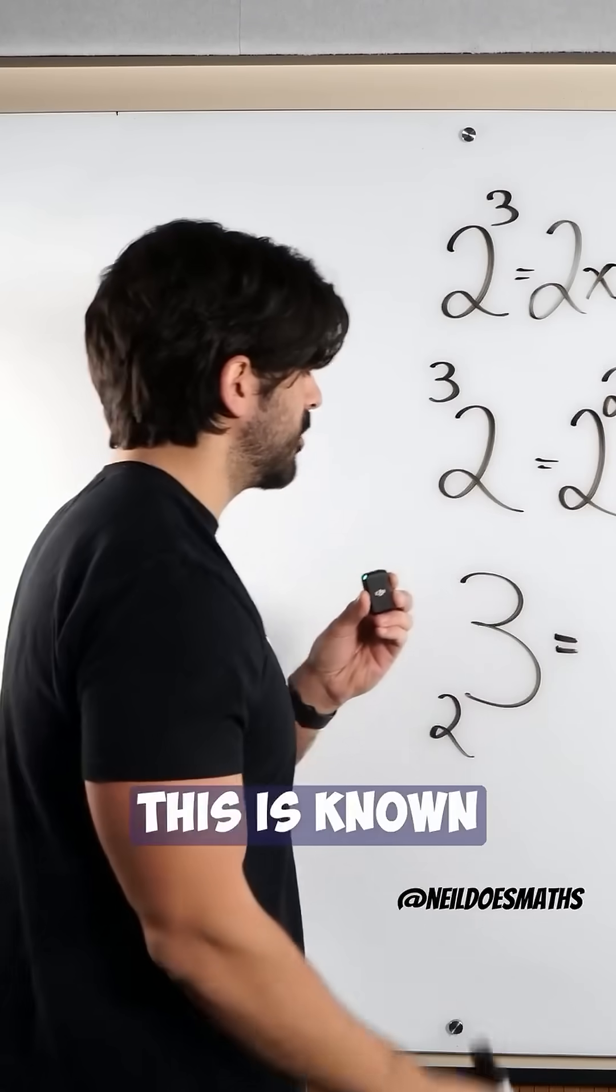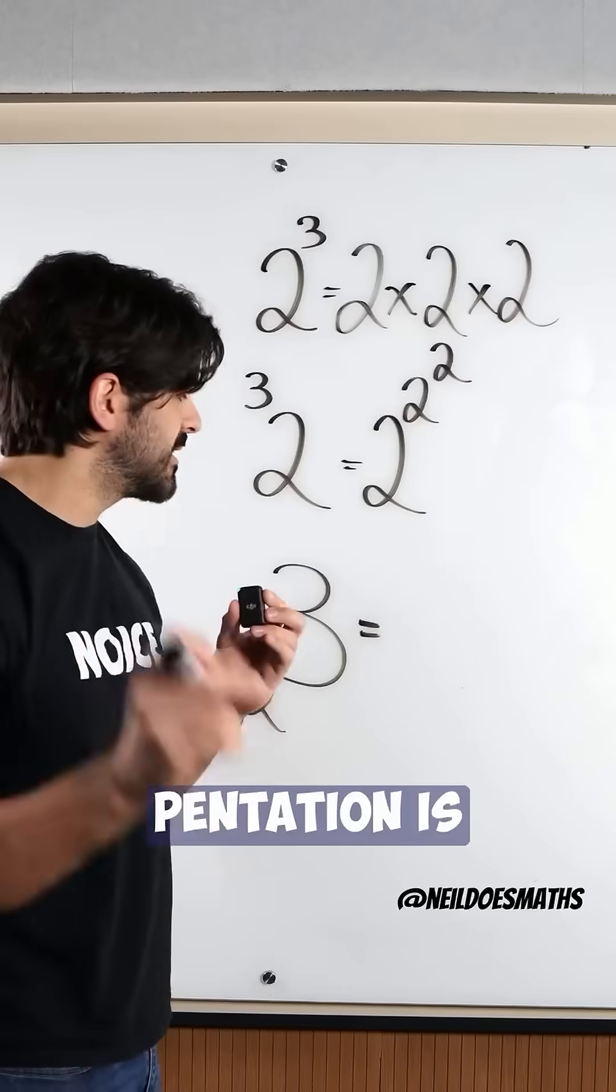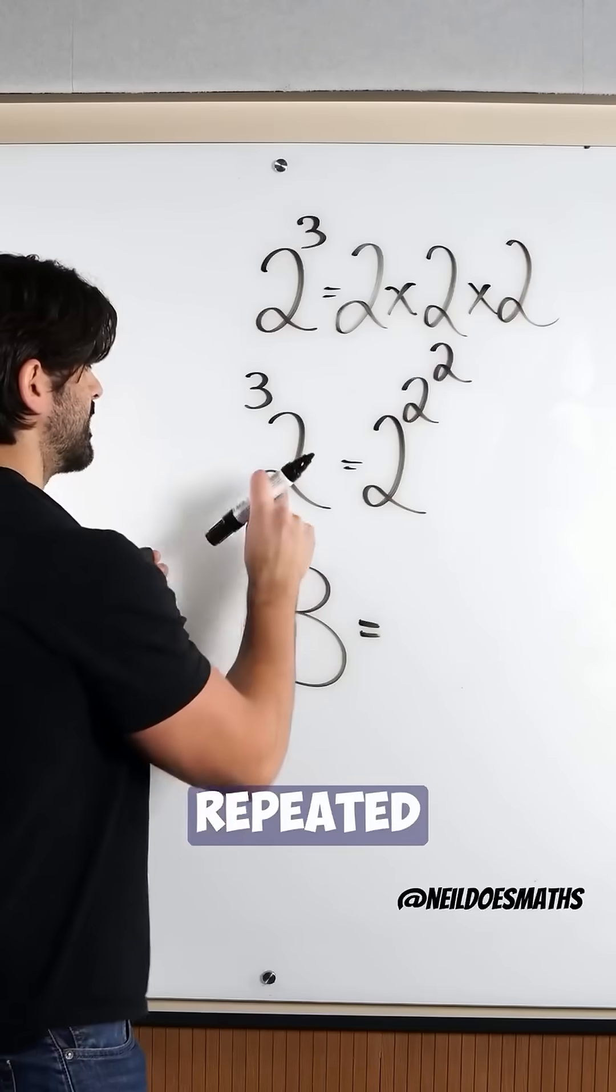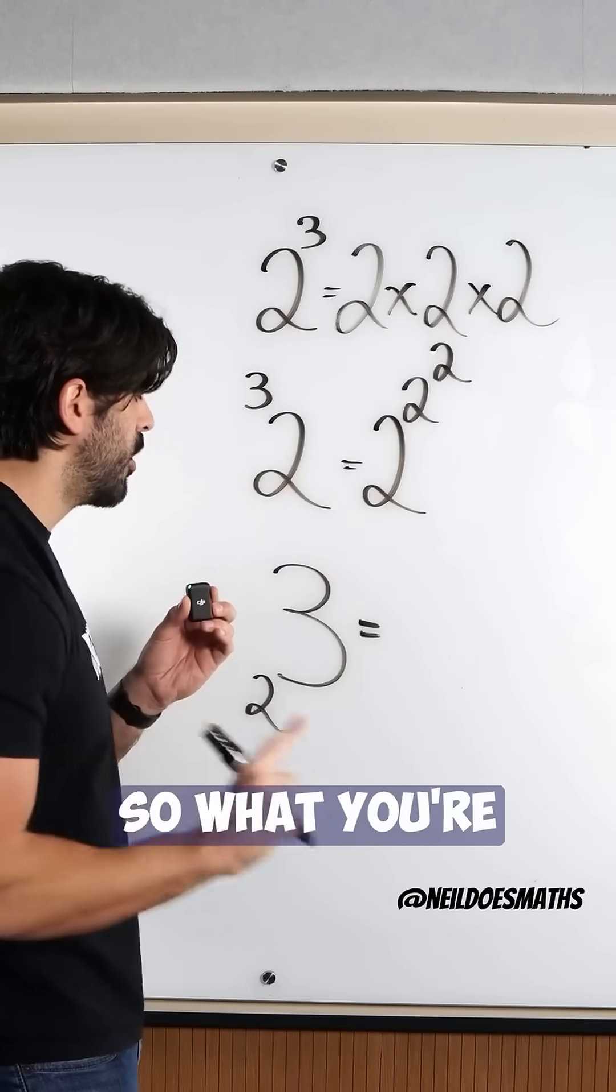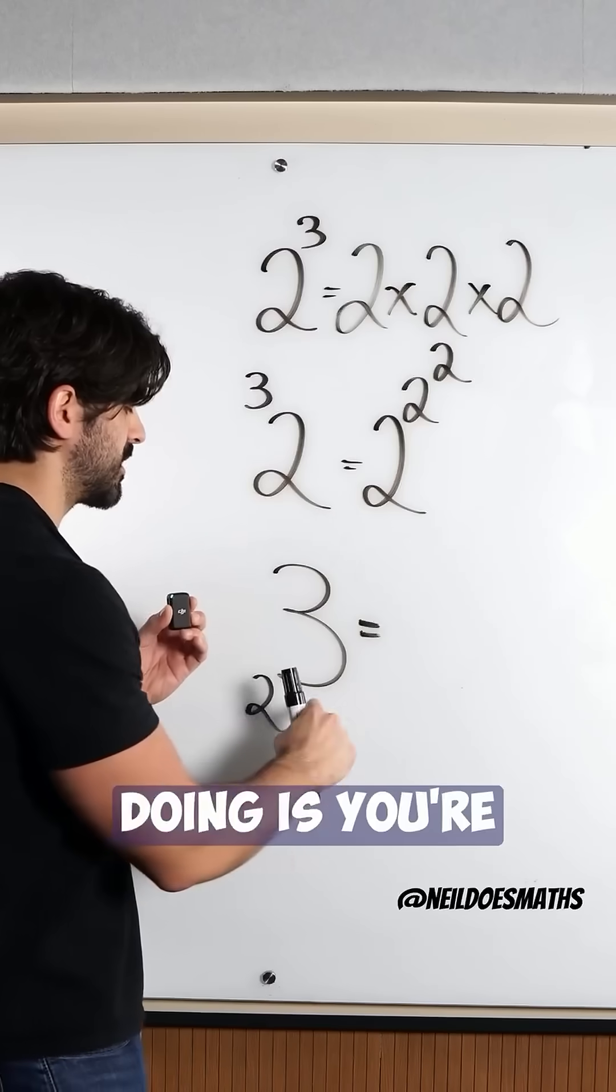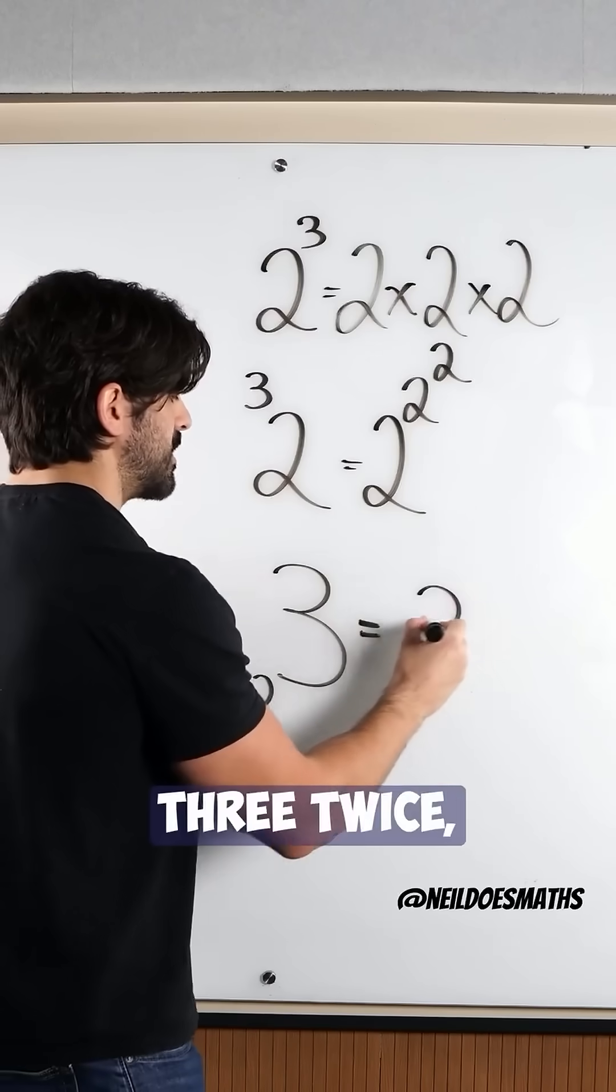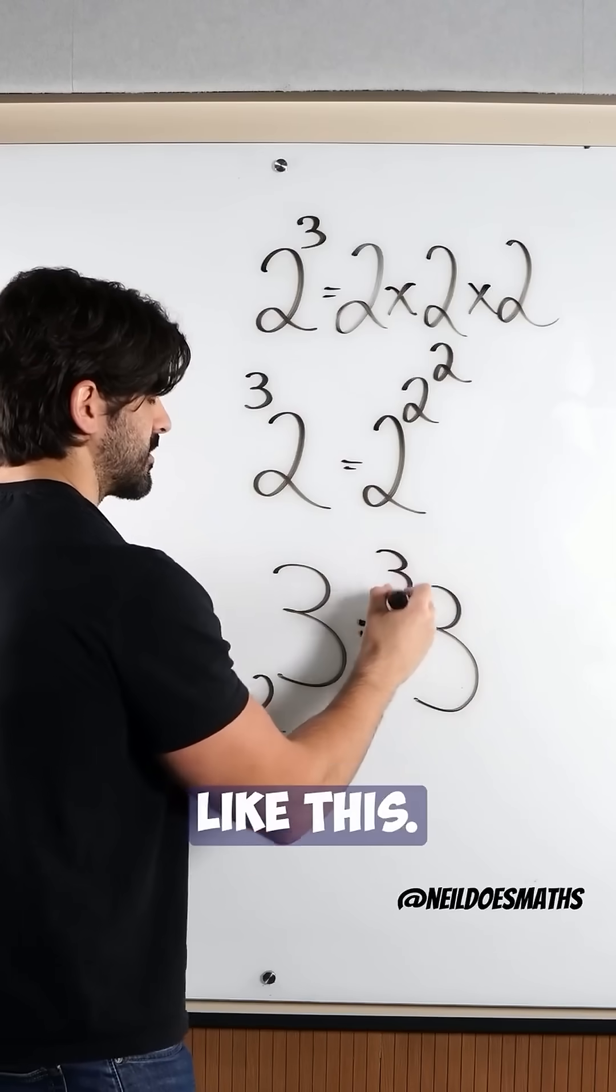This is known as pentation. Pentation is repeated tetration. So what you're doing is you're tetrating the number three twice, like this.